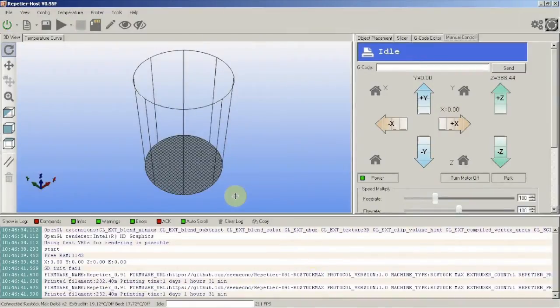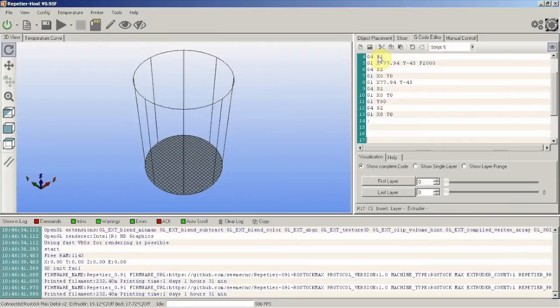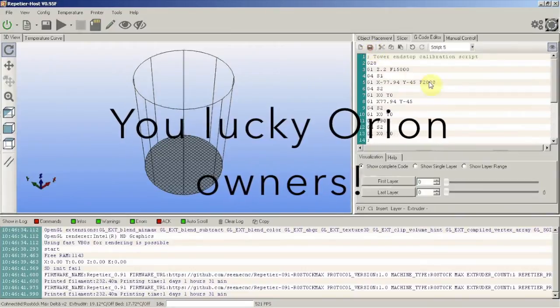Within Repeteer Hosts, select the G-code editor tab, and then choose Script 5 from the drop-down menu. Paste the code from the description and press save. I've included the G-code for both the Rostock and Orion, although Orion users will already have this saved on the SD card that was bundled with the machines.